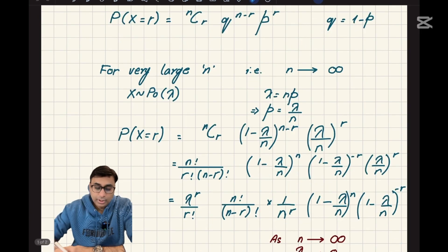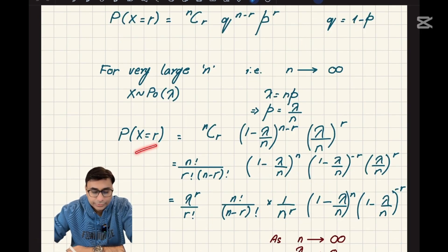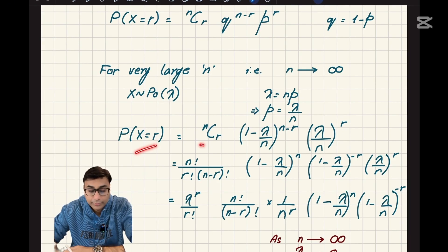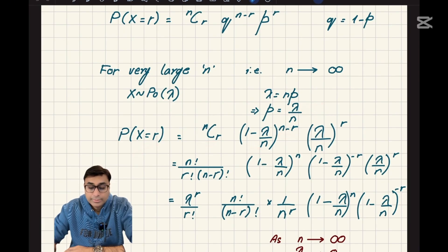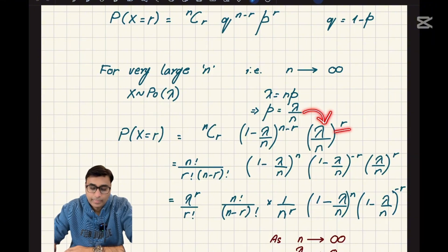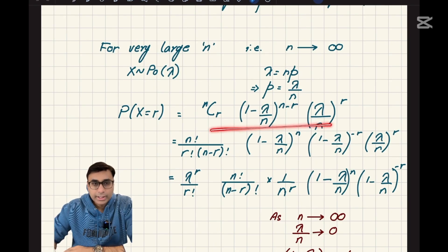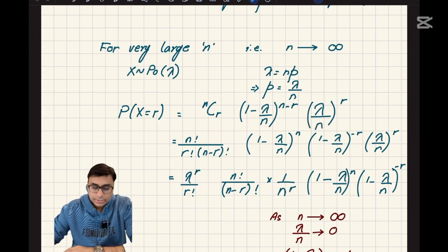We can rearrange lambda = np to write p as lambda over n. Applying the same binomial probability formula, the probability of x = r becomes nCr times q to the power n minus r times p to the power r. Since p = lambda/n, q = 1 - lambda/n, giving us nCr times (1 - lambda/n) to the power n minus r times (lambda/n) to the power r.